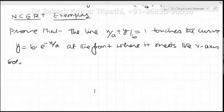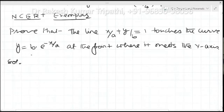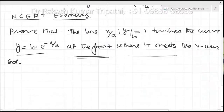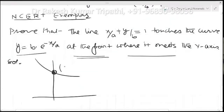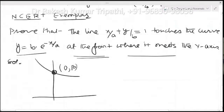We are trying to solve this question: the line x/a + y/b = 1 touches the curve — meaning it is a tangent to the curve — at the point where it meets the y-axis. Suppose this is a curve and where it cuts the y-axis, naturally at that point the coordinates will be (0, β). The point is (0, β) because the curve cuts the y-axis at this point.